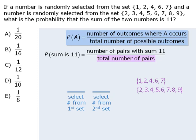Since the first set consists of 5 numbers, we can accomplish this stage in 5 ways. Next, there are 8 numbers in the second set, so we can accomplish this stage in 8 ways.